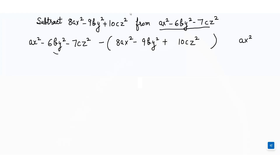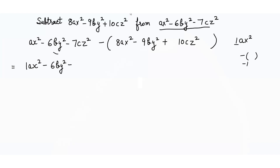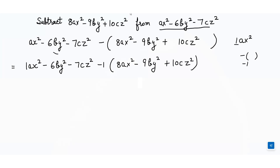You can see that ax² does not have any coefficient. If a variable has no coefficient, we can write 1 in front of it. And if a negative sign is outside the bracket, we write it as -1. So: 1ax² - 6by² - 7cz² - 1 × (8ax² - 9by² + 10cz²).